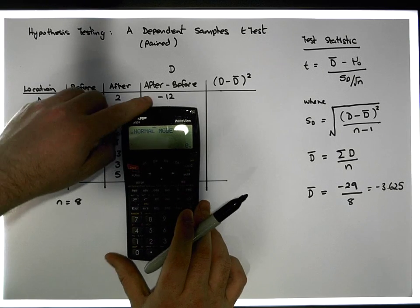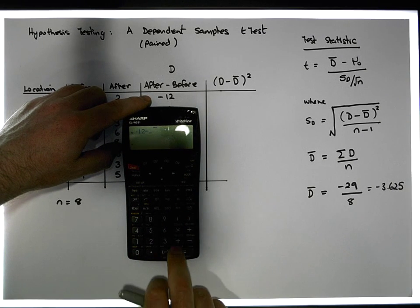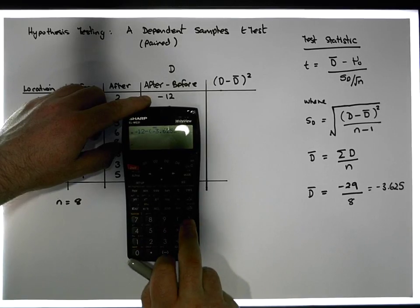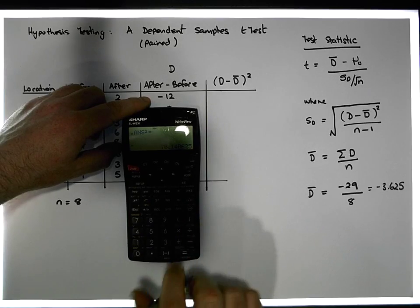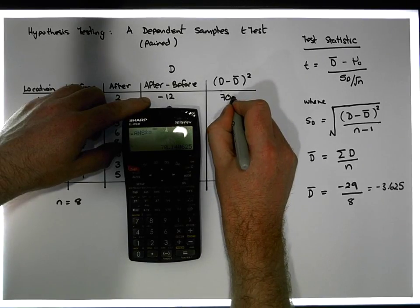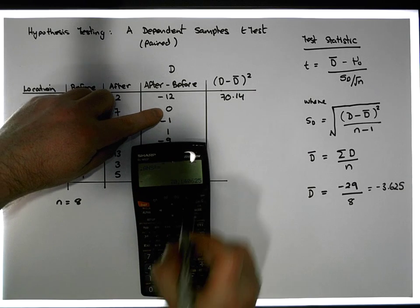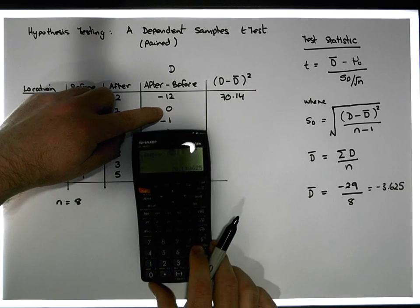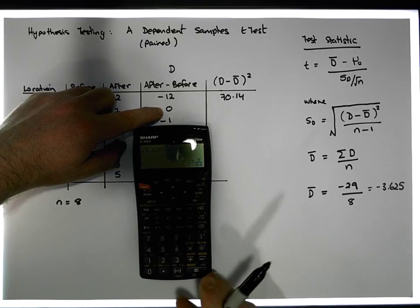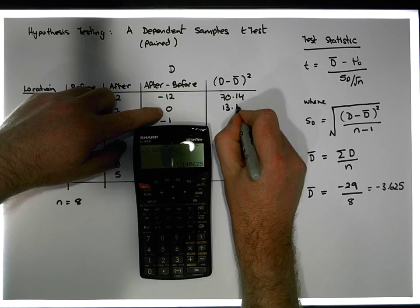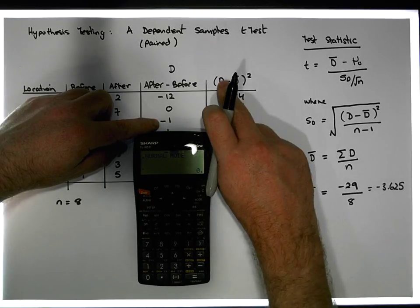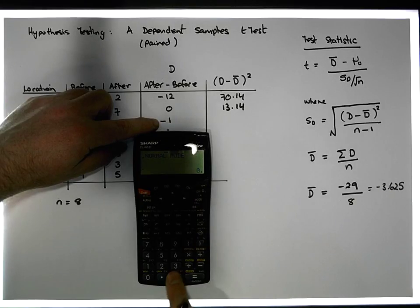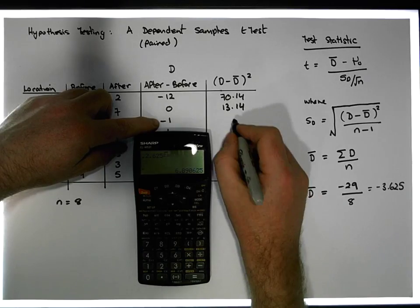The first value: we have minus 12 minus (minus 3.625), which gives us minus 8.375. When we square that, we get approximately 70.14. The next value is 0 minus (minus 3.625), which is 3.625. Squaring that gives us approximately 13.14. The next value is minus 1 minus (minus 3.625) — don't forget the minus times a minus is a plus — so minus 1 plus 3.625 is 2.625. Squaring 2.625 gives us approximately 6.89.